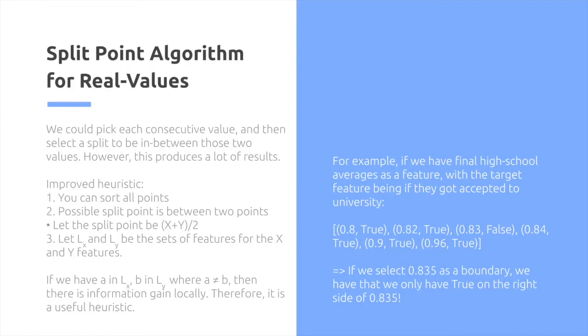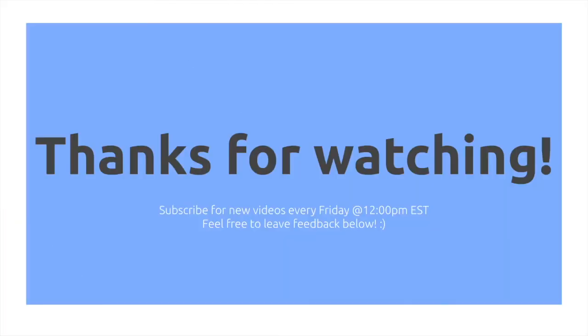So we have a in lx, which is on the left side, and b in ly, which is on the right side. Where a is not equal to b, and there is some information gain locally, then we consider it a useful heuristic. So I gave an example on the right side, if you want to pause the video and take a look. Thank you very much for watching.